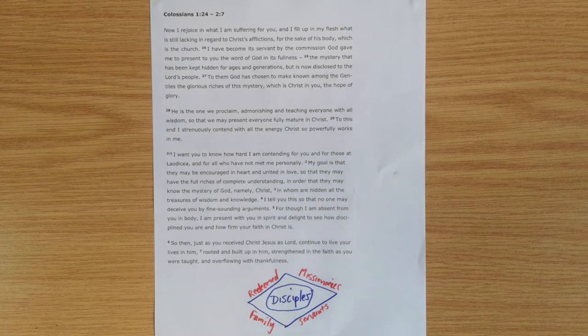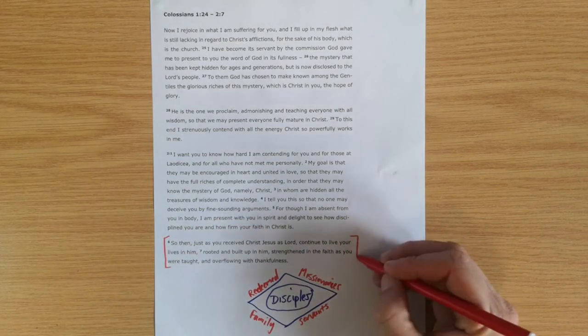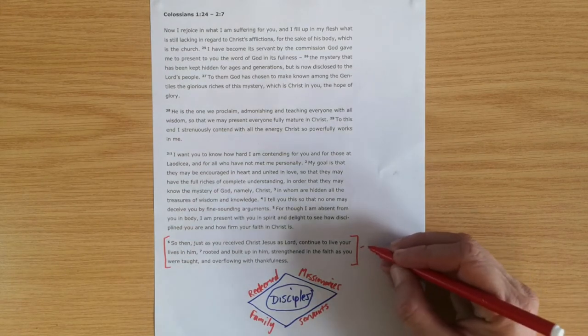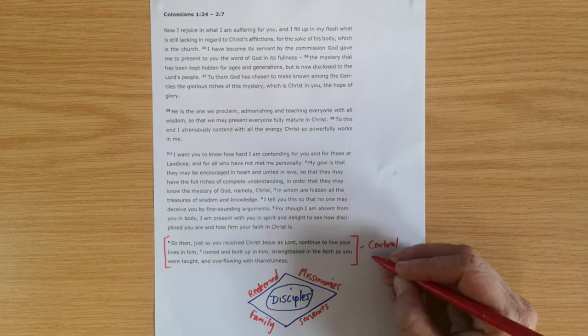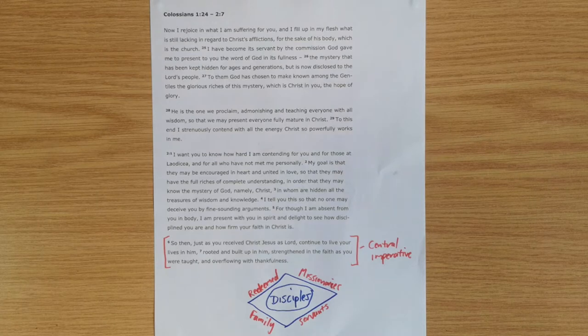Our focus will be on verses 6 and 7 of chapter 2. Verses 6 and 7 of Colossians are really the central imperative of the whole letter. This is the heart of what Paul wanted the Colossians to know and the heart of what it means for us to be disciples of Jesus.